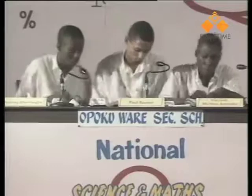Opokuwari secondary, calculate the concentration of chloride ions in the solution. In both electrolytic and voltaic cells, the anode is where oxidation takes place. That is correct.